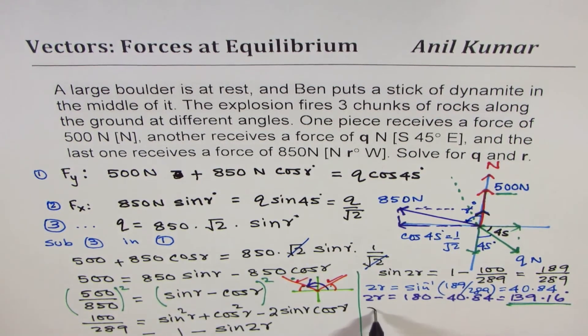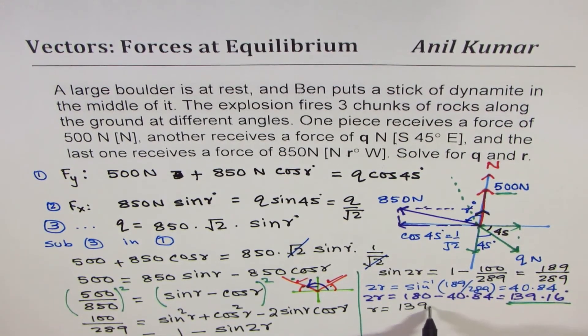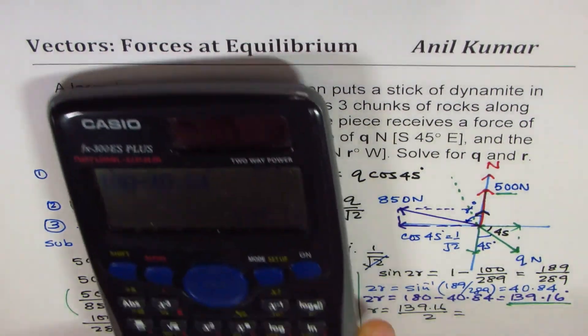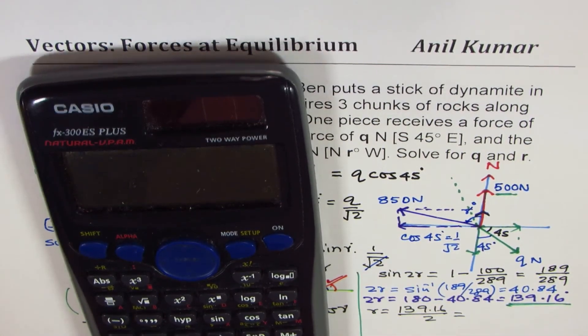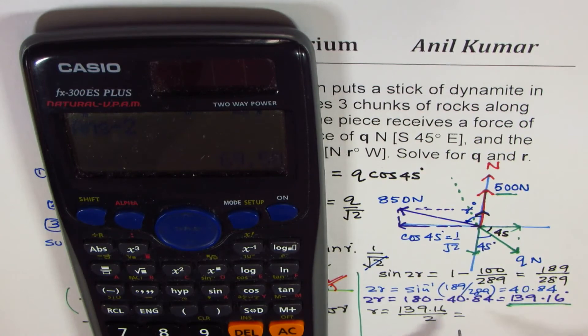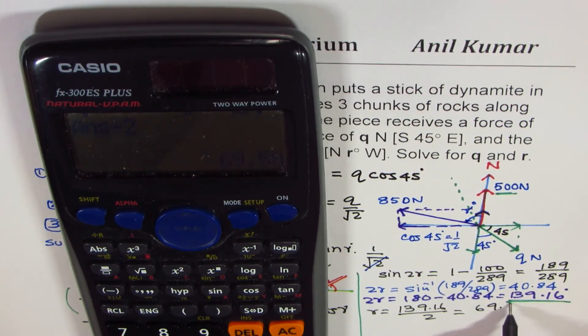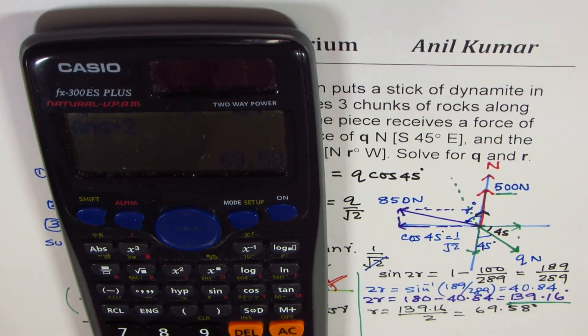That is the whole thing. So, we are taking 2r as 139.16, the second solution. Now, that was a critical thing to get the real solution. So, you can get r as equals to 139.16 divided by 2. So, we will just divide this by 2. So, we get our answer as 69.58 degrees.